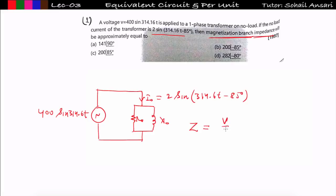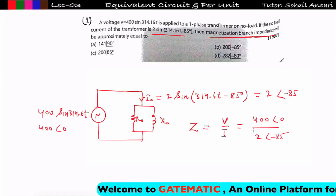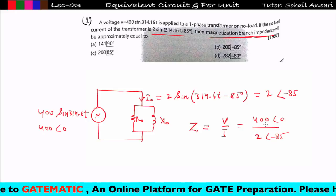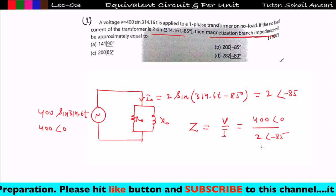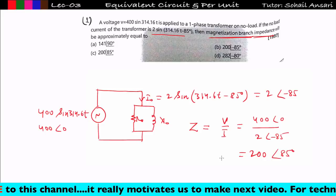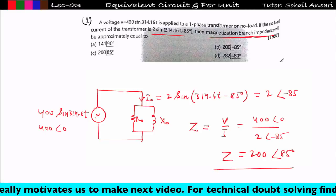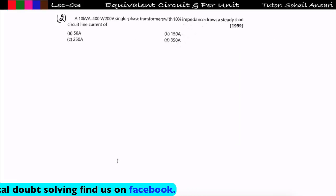The equivalent impedance is V divided by I. Writing in phasor form: V = 400∠0° and I₀ = 2∠−85°. Taking RMS values, the root 2 factors cancel. So the equivalent impedance is 200∠85°. This is the magnetization branch impedance at no load. Option C is correct.